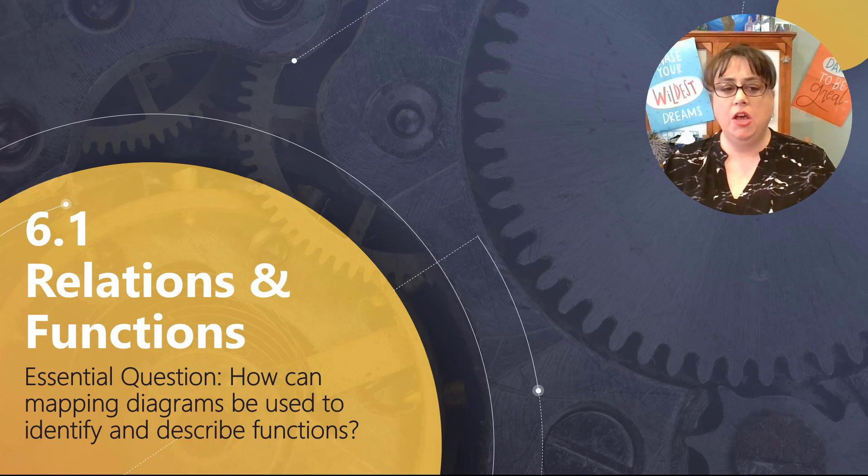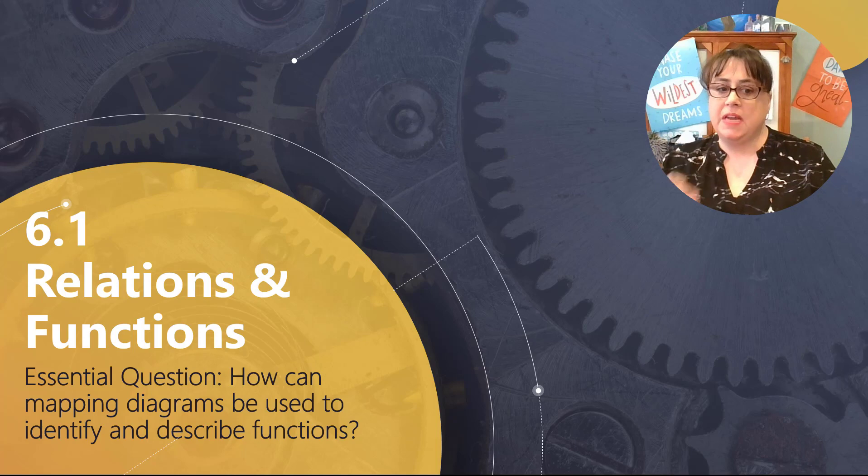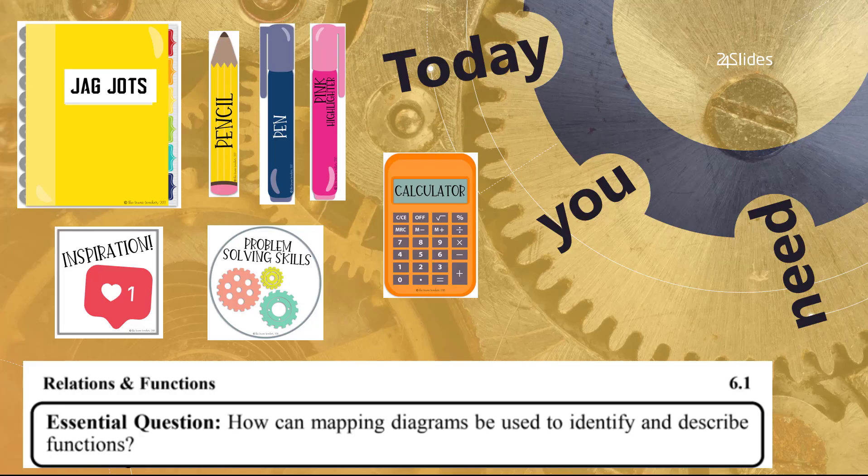And our essential question today is, how can we use mapping diagrams to help us identify and describe a function? Today you'll need your Jaguar Jots on section 6.1, a pen or pencils to write with. You might find a highlighter helpful. You will always need your problem-solving skills and some inspiration.